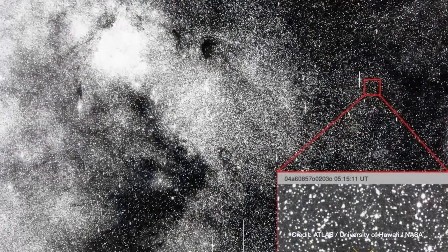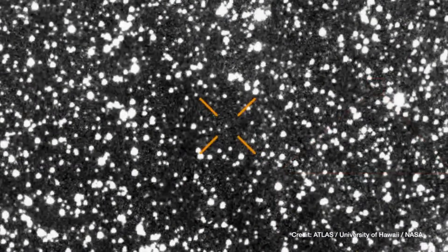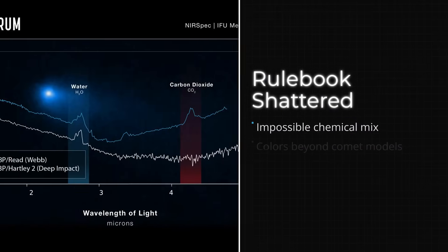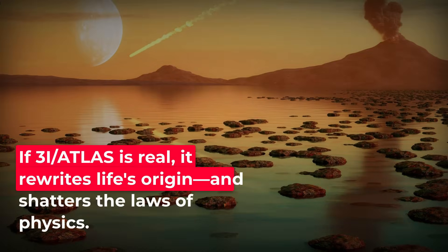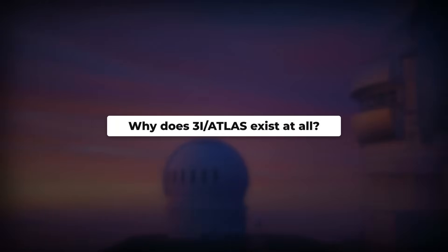October 31st, 2025. Scientists expected another icy wanderer, then 3I-ATLAS reappeared from behind the sun, shattering nearly every rule in the comet playbook. Its chemistry, color, and orbit make no sense. Even the best theories can't explain it. If what we're seeing is real, it could transform how we think about life's origins, or expose limits in physics itself. So why does this object exist at all, and what might the next observations reveal?